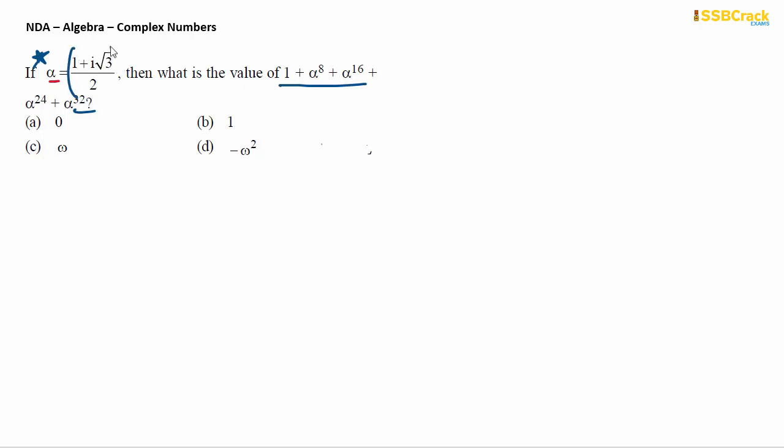Whenever you encounter a problem based on complex number where you can see the expression, I mean a complex number of the kind 1 plus i root 3 by 2, you have to match this number with omega. Do you know what is omega? Omega is a cube root of unity, which we define as omega cube equals to 1. From this we get two equations: one is omega cube equals to 1, and the other roots we get from the second equation omega square plus omega plus 1 equals to 0.